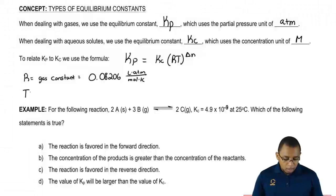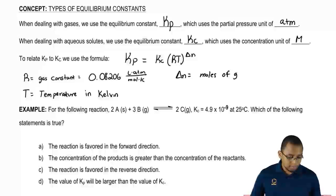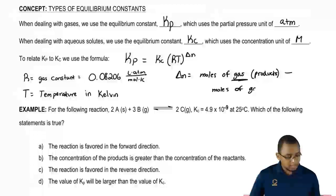We're going to say that T represents our temperature in Kelvin. Then we're going to say most importantly is our delta N exponent. Delta N equals moles of gas as products minus moles of gas, again remember gas, as reactants.